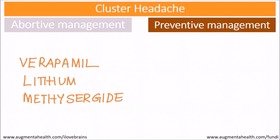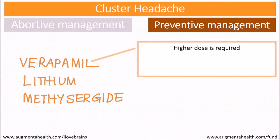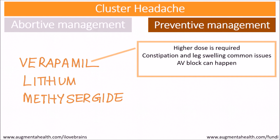Preventive management strategies include drugs like verapamil, lithium, and methysergide. Specifically for verapamil, higher doses are required than usual. Constipation and leg swelling are common issues. AV block can occur, which is why a baseline ECG is very much necessary before starting verapamil.